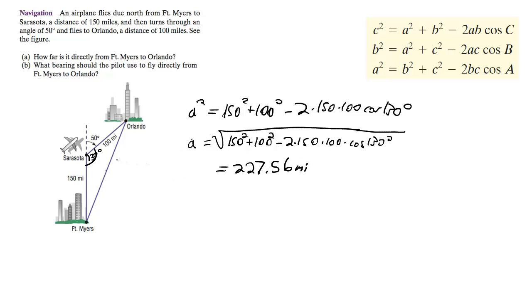All right, so we have this. So what this means now is they want to find what bearing should the pilot use in order to fly directly from Fort Myers to Orlando. So they want to know what this angle is over here. So what we can do is actually just use, in this case, the law of sine.